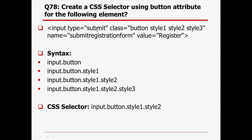CSS selector using button attribute: in the sample example, type is 'submit', class is 'button', with style1, style2, style3. The syntax is: tag name, dot, button, then dot, and all these attributes one by one. So: tag name, dot, button, dot, style1, style2, style3. You can create any kind of CSS selector from the specified attributes for a particular element.